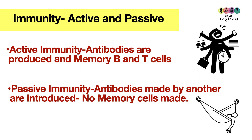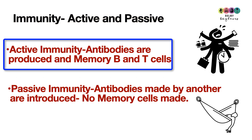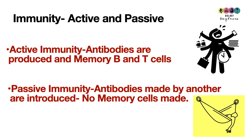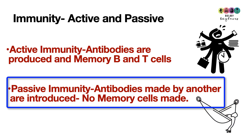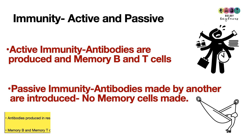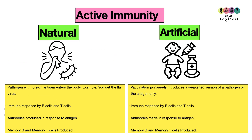Immunity can be classed as active or passive. Active immunity means your immune system is actively doing something — it's producing antibodies and producing memory B cells and memory T cells. Passive immunity means your immune system is not doing anything: the antibodies are made by another organism and introduced into your body, so no memory B cells or memory T cells are made.